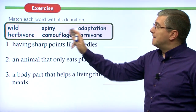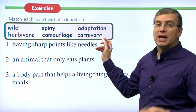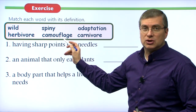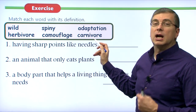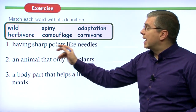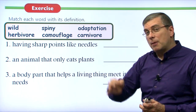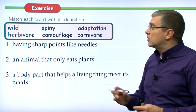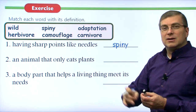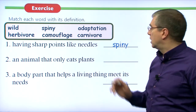Let's move on to this exercise: match each word with its definition. We have the words wild, spiny, adaptation, herbivore, camouflage, and carnivore. Number one: having sharp points like needles — remember the picture of the fish with very sharp points coming off its body like needles? That fish is spiny. It's a very spiny fish with a lot of sharp points on its body. Number two: an animal that only eats plants. This is an important part of the lecture — one type of animal that only eats plants. Do you remember? It's an herbivore. A good way to remember is that an herb is a type of plant.